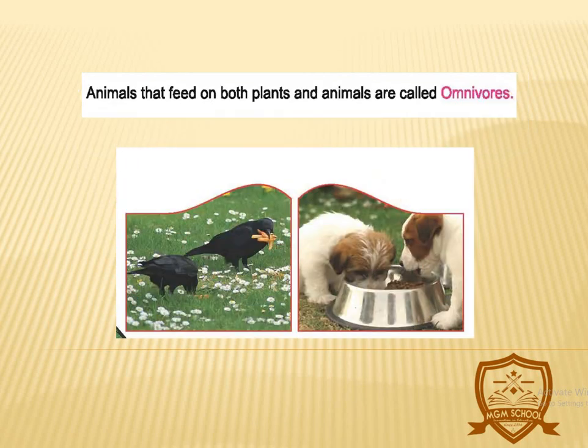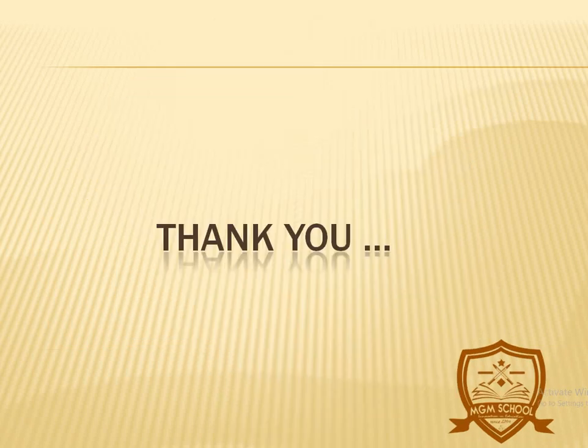Animals that feed on both plants and animals are called omnivorous. Example: crow and dog. Thank you.